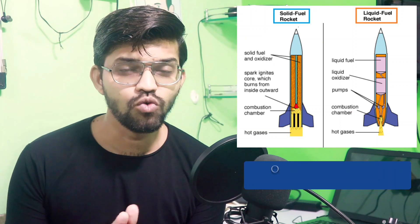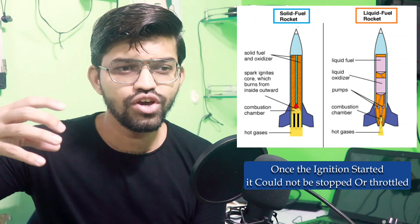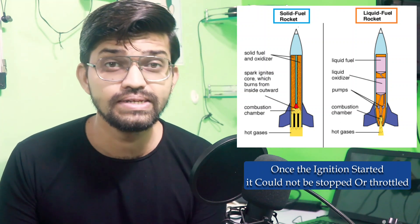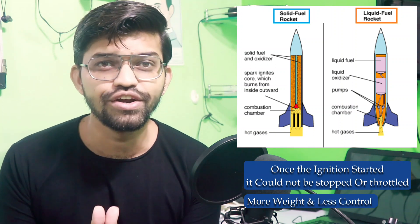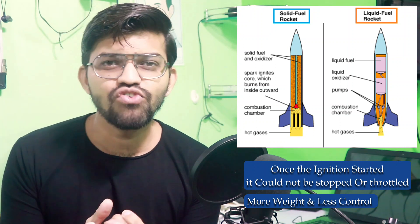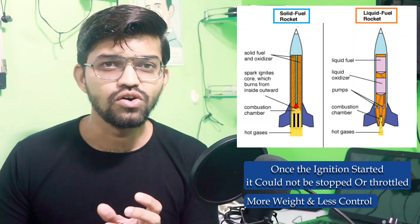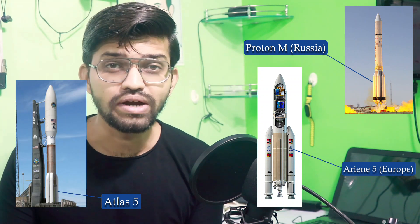However, there is one of the biggest disadvantages of the solid engine: once ignition starts, we cannot stop it or throttle it. In the Vikas engine, if we want to increase thrust we increase the supply of oxidizer, but throttling cannot occur in the solid engine. Additionally, solid engines have a higher weight due to all the composite mixtures, which is why they are used in the first stage and strap-on boosters of the PSLV. Some examples of rockets that use solid propulsion systems are Russia's Proton-M, Europe's Ariane 5, and the US Atlas 5.